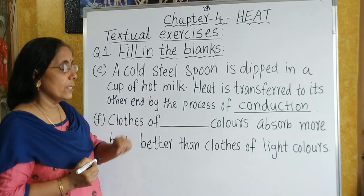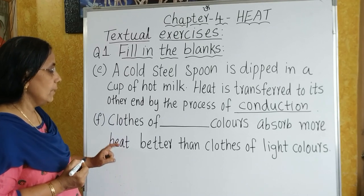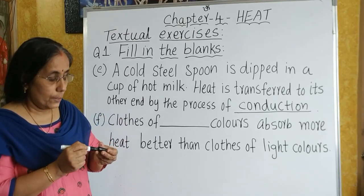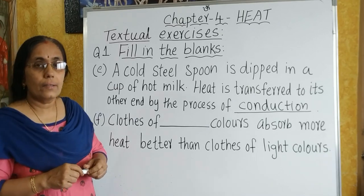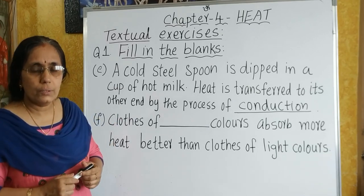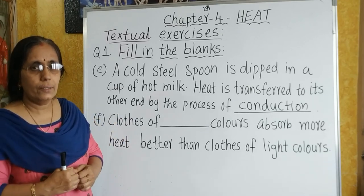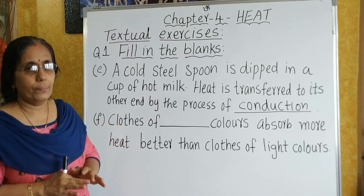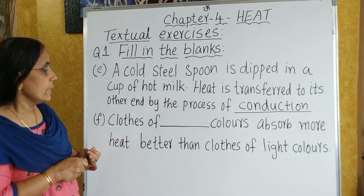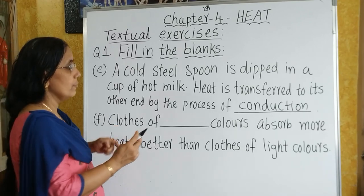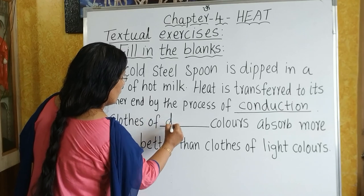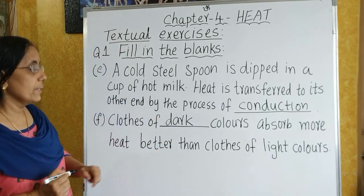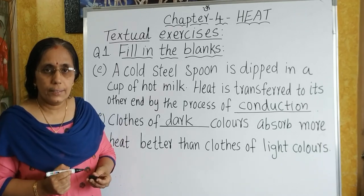Clothes of dash colors absorb more heat better than clothes of light colors. You have learnt that dark or black colored clothes can absorb more heat, whereas light color releases or reflects heat. Therefore, the answer is: clothes of dark colors absorb more heat better than clothes of light colors.